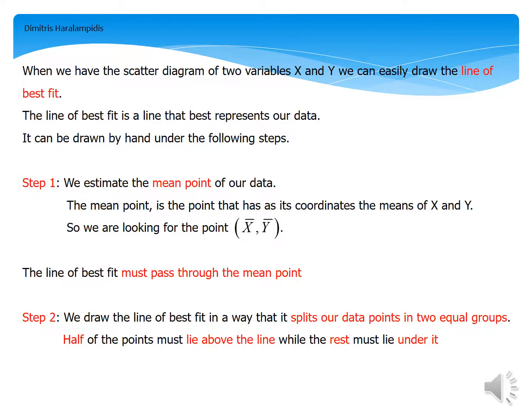In first step, we start by estimating the mean point of our data. The mean point is the point that has as its coordinates the means of both variables X and Y. So when we look for mean point, we are just looking for the point with coordinates X mean and Y mean.